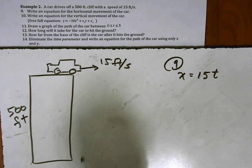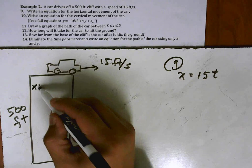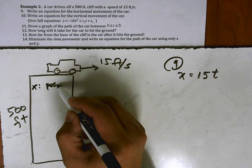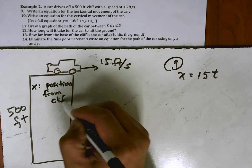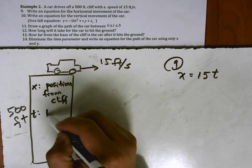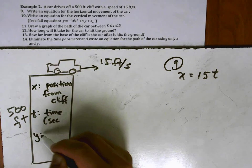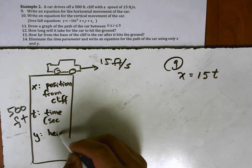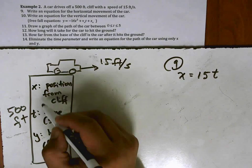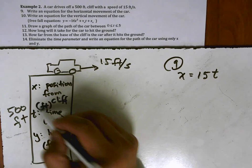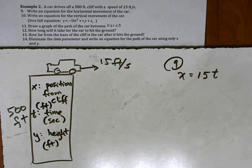Let me just write this in this little box right here which is also the cliff. So x is the position from the cliff, t is time and this is in seconds. We're also going to use another variable called y which is the height from the ground. And this is also measured in feet.